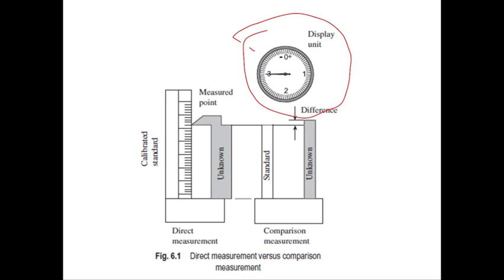Accuracy of comparison measurement, on the other hand, primarily depends on four factors: accuracy of the standard used for setting the comparator, the least count of the standard, the sensitivity of the comparator, and accuracy of reading the scale. In contrast to direct measurement, the role of the sensing element is significant in a comparator. The variation in the measured value is in terms of changing displacement, pressure, fluid, and temperature.